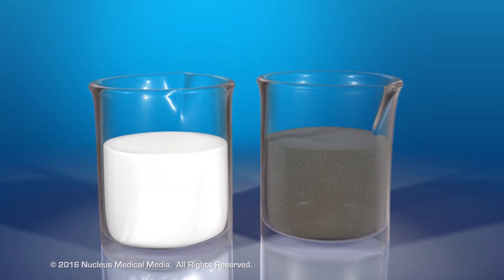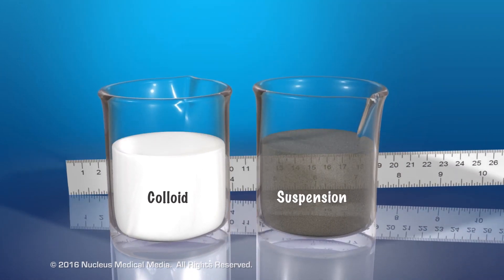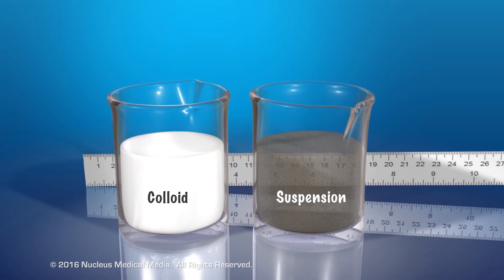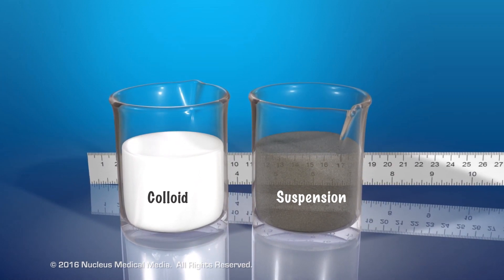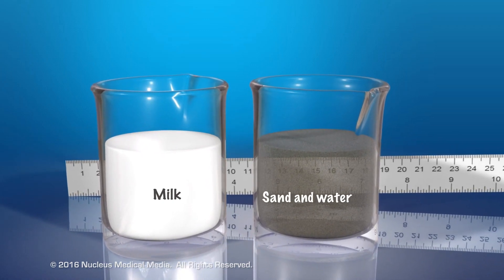Heterogeneous water mixtures such as colloids and suspensions are never transparent. They're always cloudy, hazy, or opaque, and you can't see through them. In this example, the colloid is milk and the suspension is sand in water.